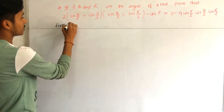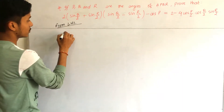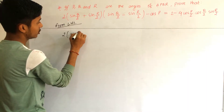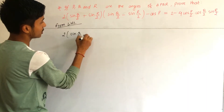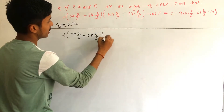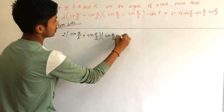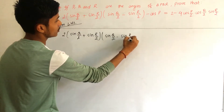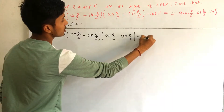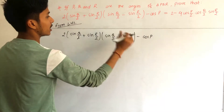We solve from the LHS. From the LHS we have: (sin(Q/2) + sin(R/2))(sin(Q/2) - sin(R/2)) minus cos P. This is our LHS.